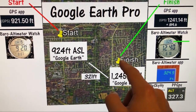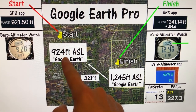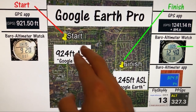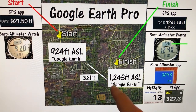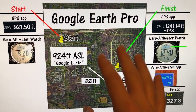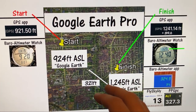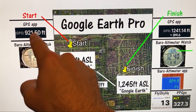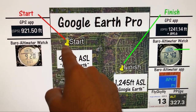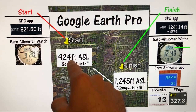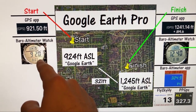The numbers shown on screen are what Google Earth reported when I placed my cursor over each spot. There is a 320–321 foot elevation difference between the two locations, with the second being higher. Interestingly, none of the devices showed any significant discrepancy. GPS on my iPhone located the starting spot at 921.5 feet above sea level, which matches Google Earth within a couple of feet.